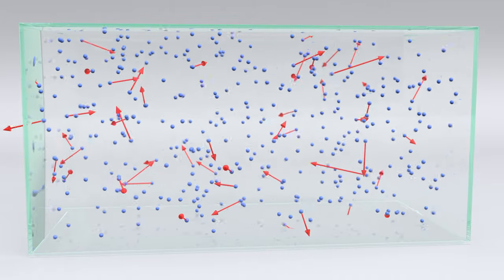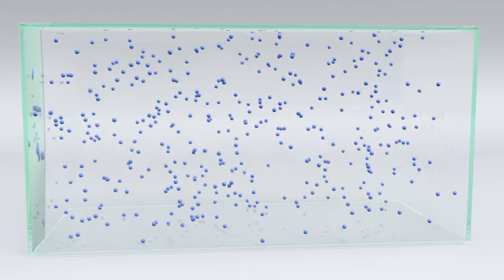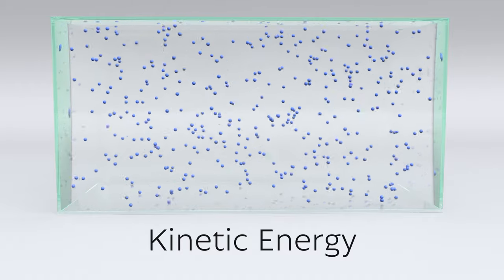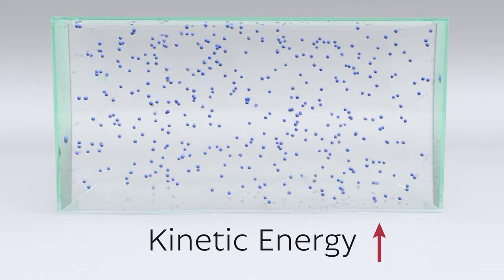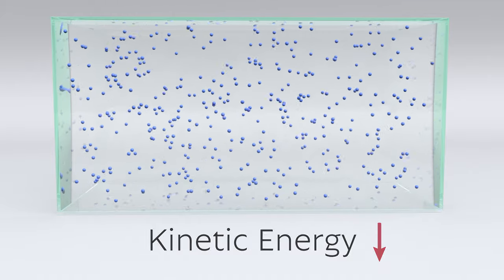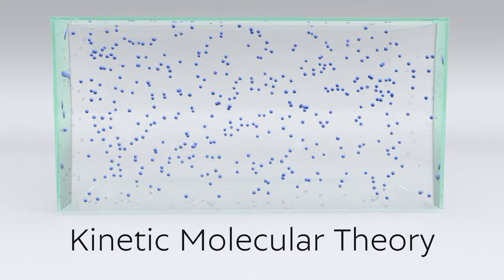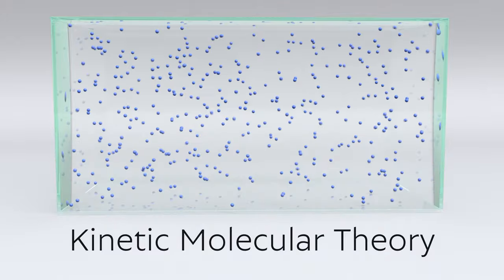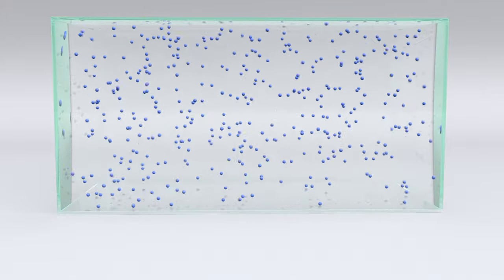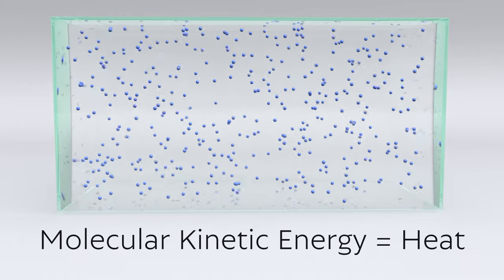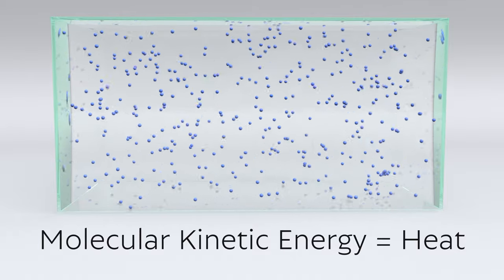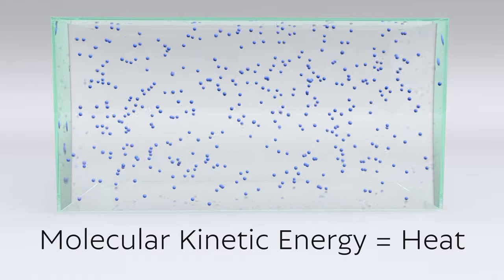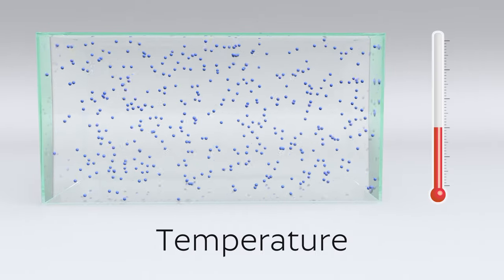The directions change as the particles collide with the walls and with each other. How fast a molecule is moving is linked to something called kinetic energy. Kinetic just means movement, so this is the energy of motion. More kinetic energy means faster motion and less means slower. The kinetic molecular theory is the idea that molecules are always moving in gases, liquids, and even solids. Incidentally, the kinetic energy of molecules is also known as heat — it's thermal energy. Because some particles are moving slower and some moving faster at any given moment, we say that the average kinetic energy of the particles is the temperature of the gas.